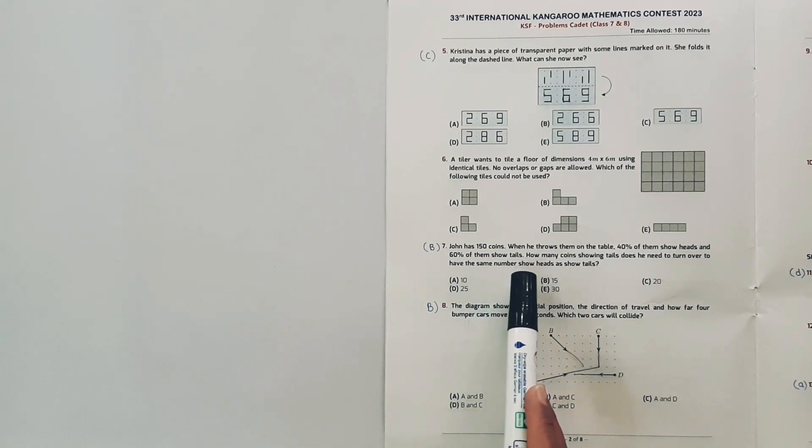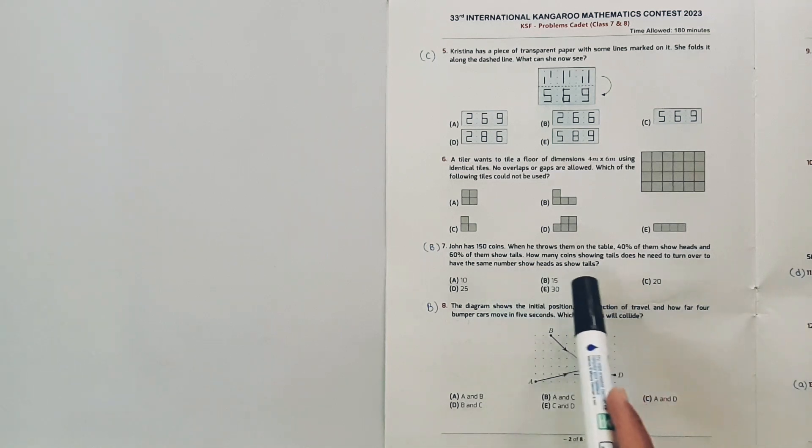John has 150 coins. When he throws them on the table, 40% of them show heads and 60% of them show tails. How many coins showing tails does he need to turn over to have the same number showing heads as showing tails?